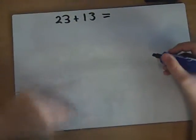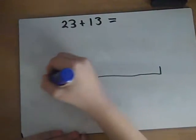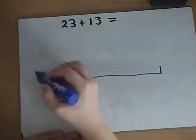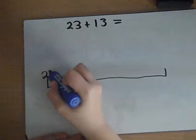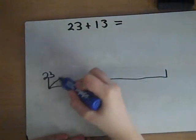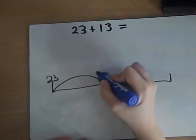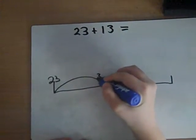So I'm doing 23 add 13. I'm going to put 23 there and I'm going to add 10. So I'll put 33.